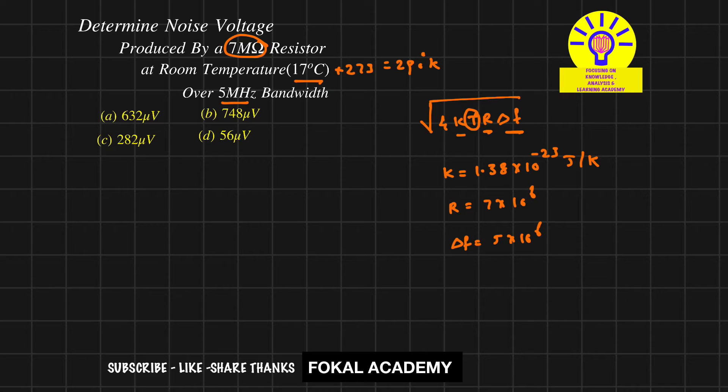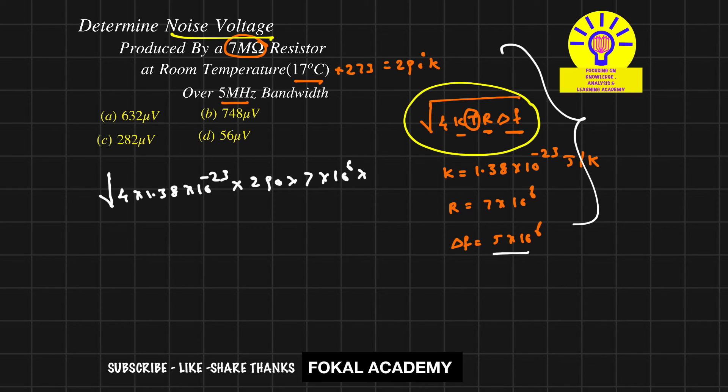Now substitute all this data into this formula. Then we get noise voltage equal to root of 4 into k means 1.38 into 10 power minus 23 into T means 290 into R means 7 into 10 power 6 ohms into delta f, the bandwidth, that is 5 into 10 power 6 under root. By using calculator we will get this value equivalent to 748 microvolts.